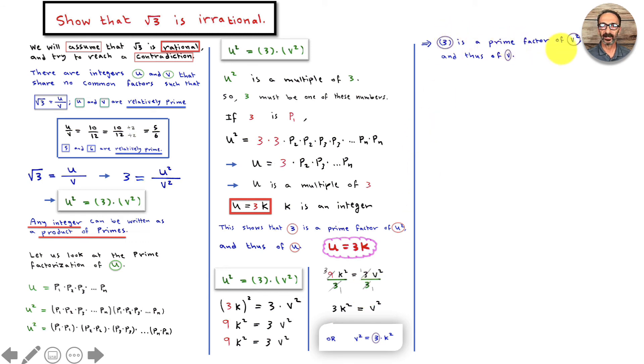It will give you the same idea to conclude that 3 is a factor of v. So 3 is a prime factor of v squared and thus of v.